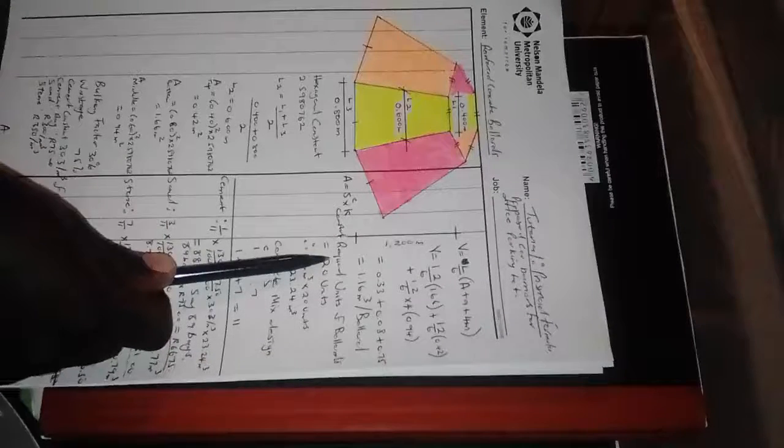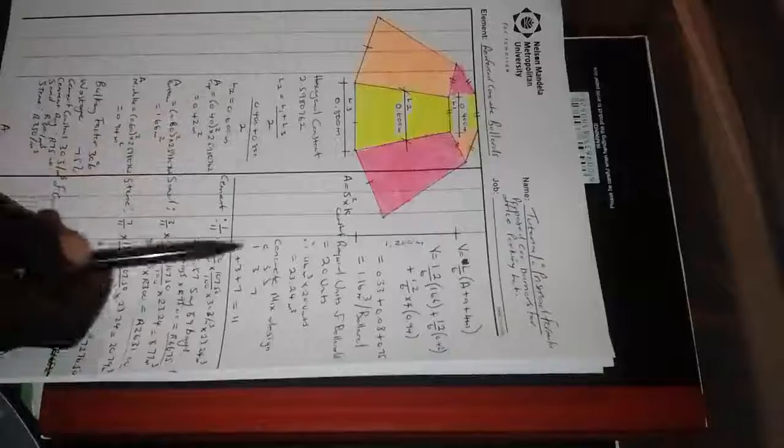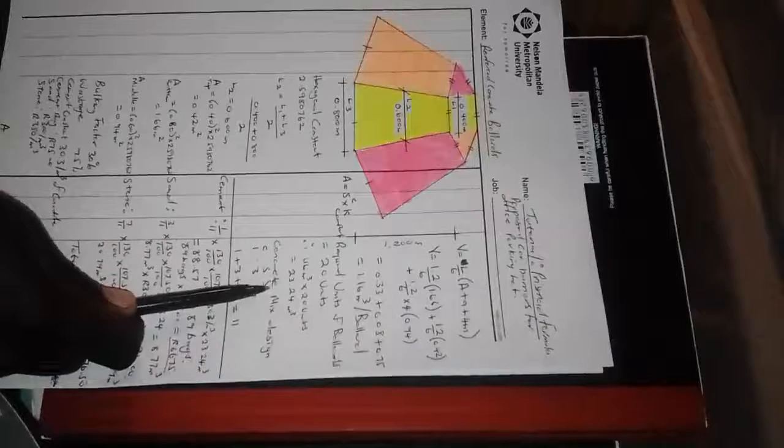We require 20 units per bullet. So we say 20 times 1.16 per bullet, that gives us 23.24. And our mix design is the same as the previous example: 1 is to 3 is to 7. So 1 part cement, 3 parts sand, 7 parts stone. You know that you must add up the ratio so that you can have a relative reference point when you're doing your ratio calculations.